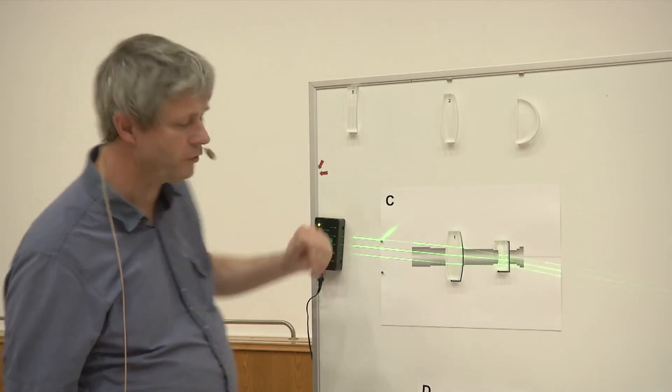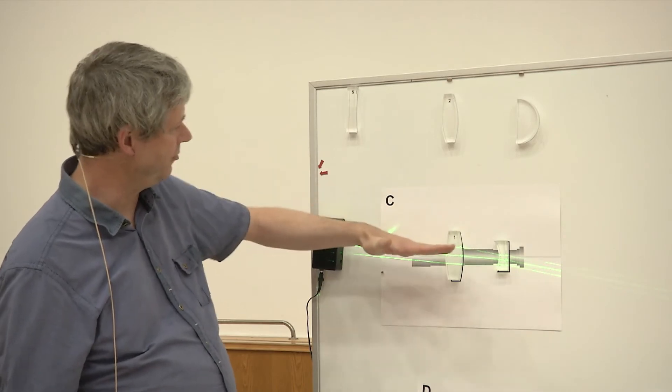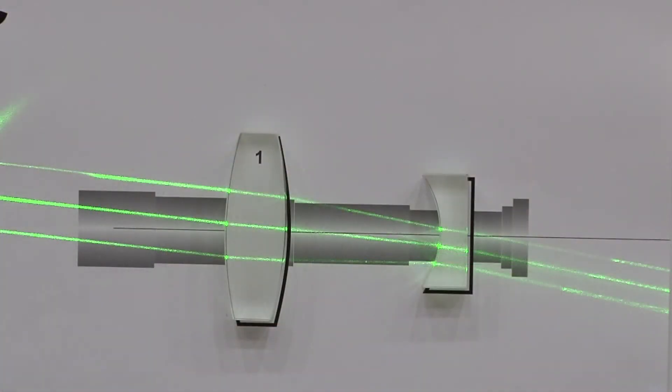As opposed to the Keplerian system, here we have an upright image because it becomes magnified this way.